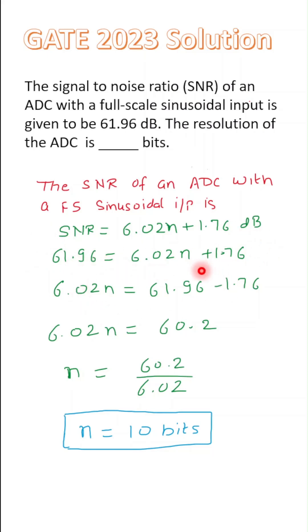After simplifying this expression, the value of n can be easily found out, which is 10 bits. I hope this question is very clear to all.